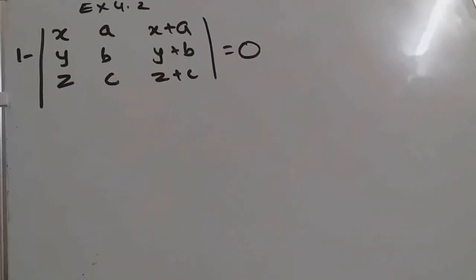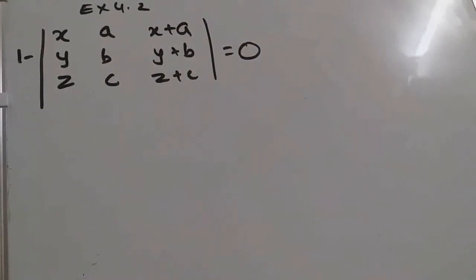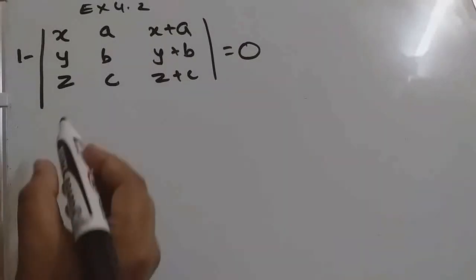Now we will start exercise 4.2. This is a very important exercise. In question first is using the property of the determinant. Together we have 6 properties, and using these properties, without expanding. Remember this, without expanding, in exercise 1 to 5, prove that. This we have to prove.